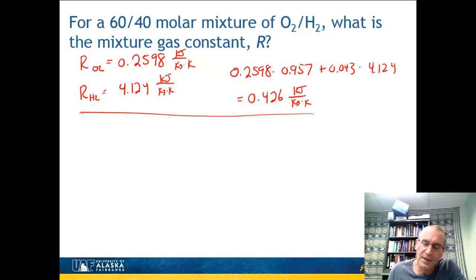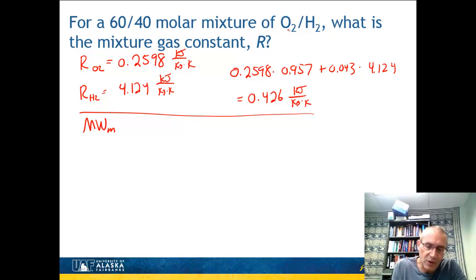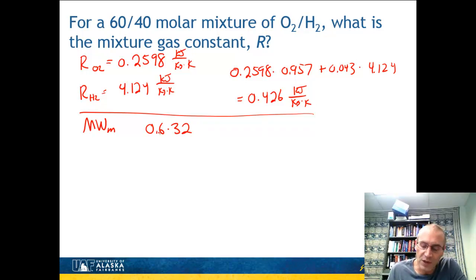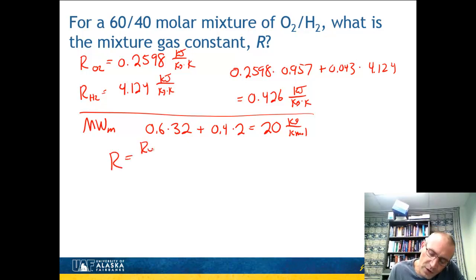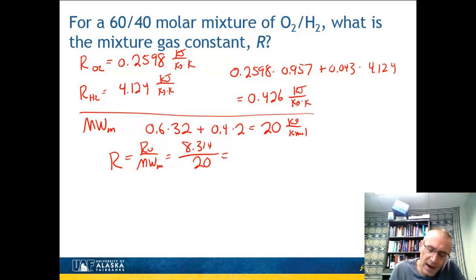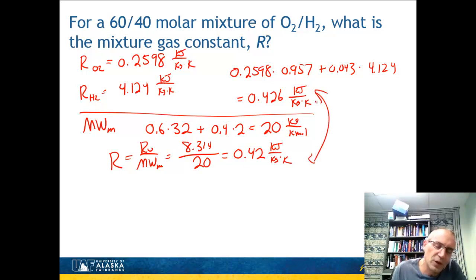There's an alternative method using the equivalent molecular weight of the mixture. Weight each component's molar mass by its mole fraction: M_mix = 0.6×32 + 0.4×2 = 20 kg/kmol. Then R_mix = R_universal / M_mix = 8.314 / 20 = 0.42 kJ/(kg·K). Both methods give essentially the same answer, with only minor rounding differences.